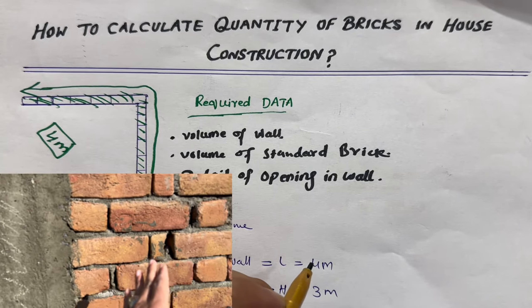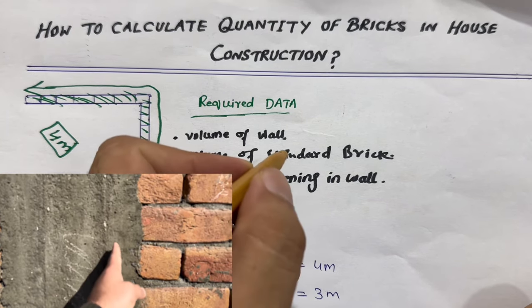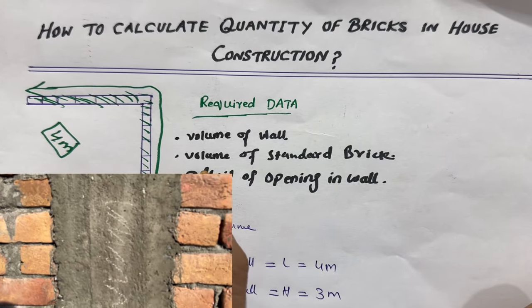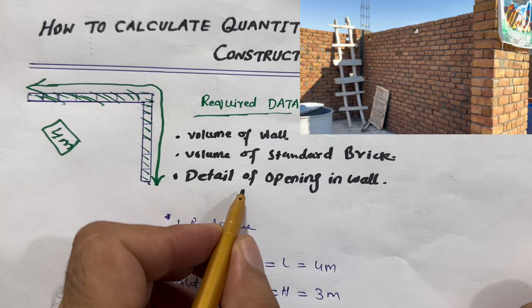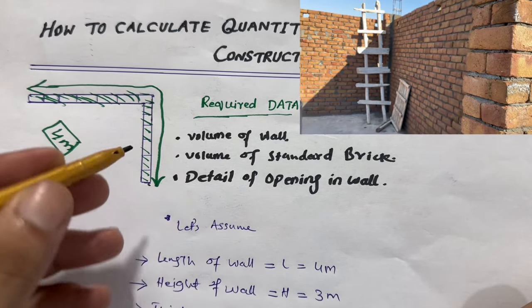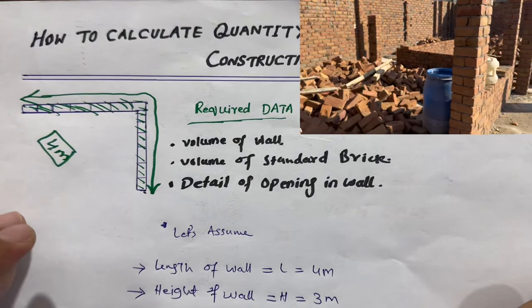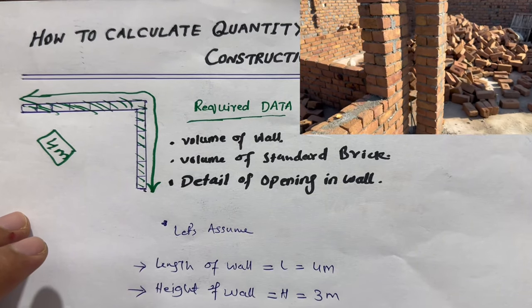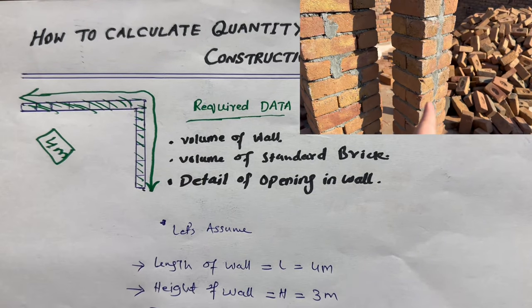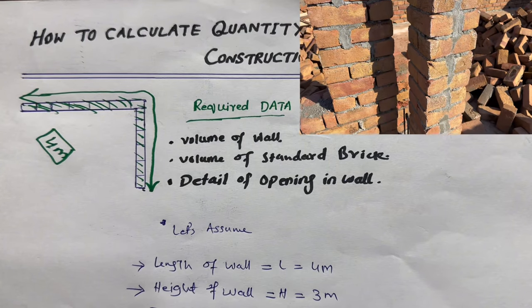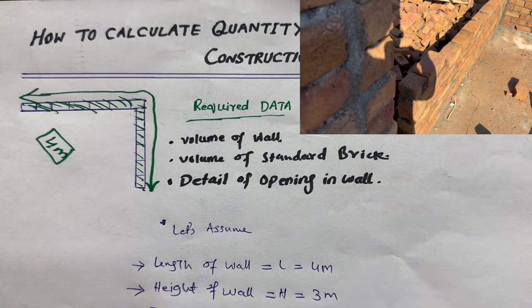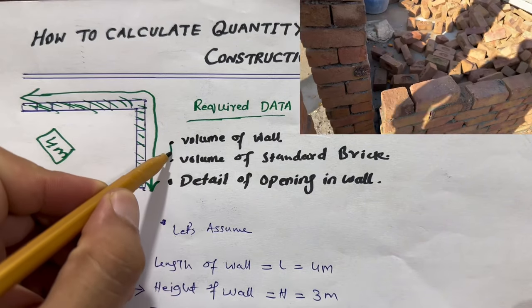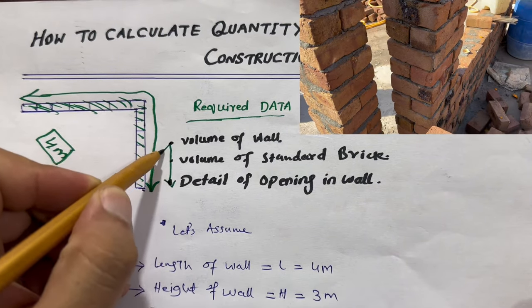To find number of bricks, we require some data. First one is you should know about the volume of wall. Next, volume of standard brick. And the third one is detail of opening in wall. We don't have any opening here, but in one bedroom or two bedrooms we have opening schedule for the door, windows, ventilation, so we will deduct that from the total volume of wall.